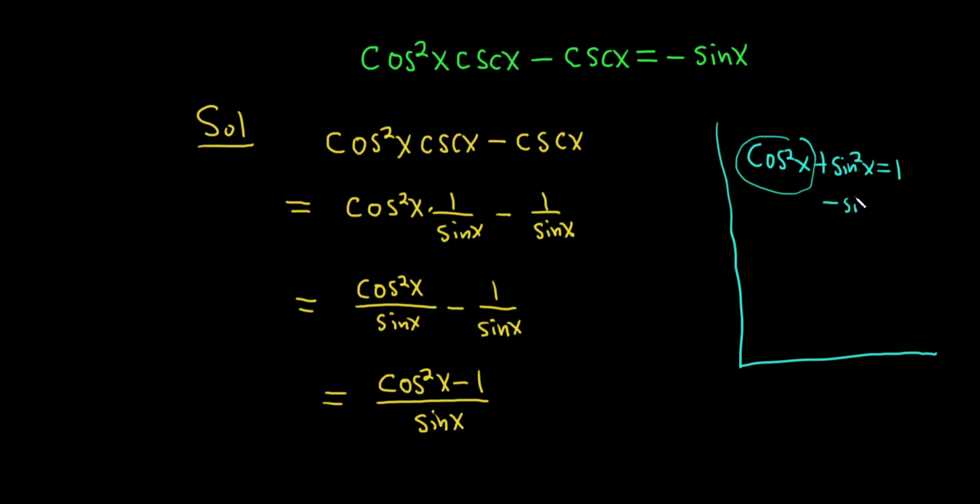We can do that by subtracting sine squared. So cosine squared is equal to 1 minus sine squared.